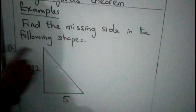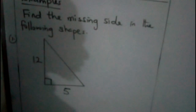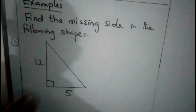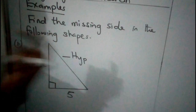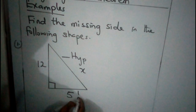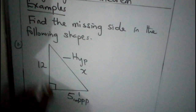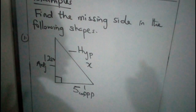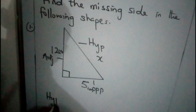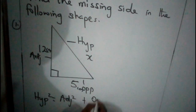On the board: find the missing side in the following shapes. Looking at this shape, it is a right-angled triangle — it has 90 degrees as one of its angles. Two sides are given and we are to find the missing side. Now, the slant side is the longest side, which is the hypotenuse. We don't know it, so we regard it as X. The opposite is 5 centimetres and the adjacent is 12 centimetres. What we are looking for is the hypotenuse, and the formula is: Hypotenuse squared equals Adjacent squared plus Opposite squared.